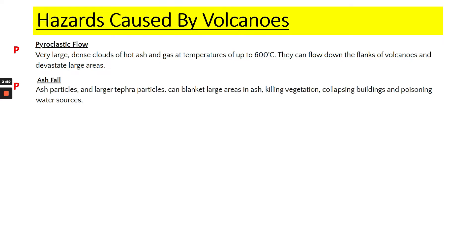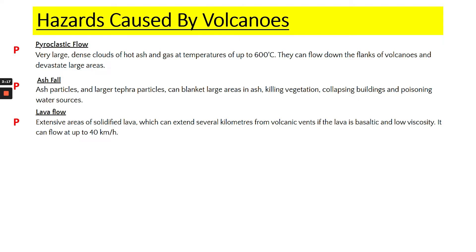Ash fall, mainly in composite volcanoes, is whereby ash particles and tephra are thrown into the air. That kills vegetation over time, the weight of the ash on buildings can collapse them, and it can also get into water sources, poisoning people who drink it. Lava flows are when there are extensive areas of lava flowing down a hillside, and lava flows can wipe out anything in their path because of the heat with which they flow.